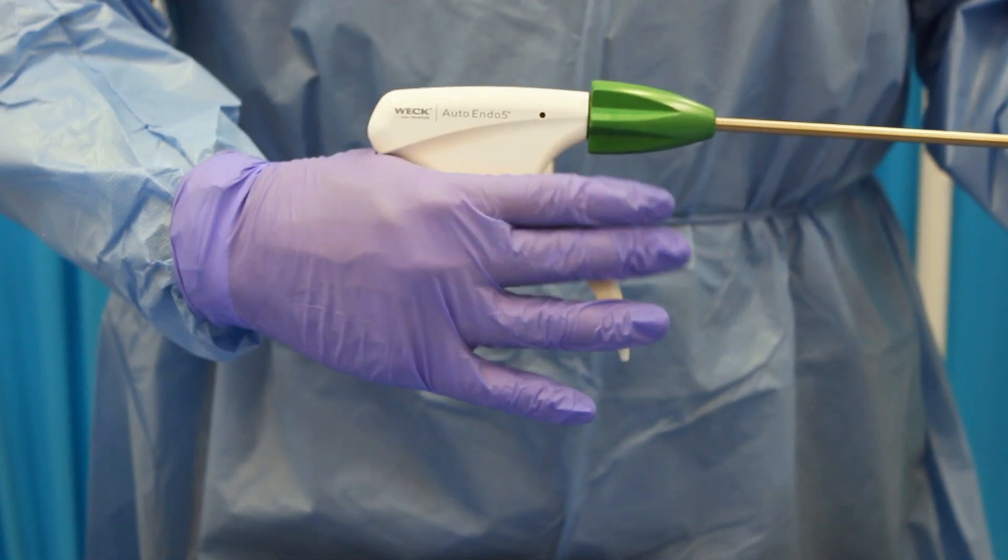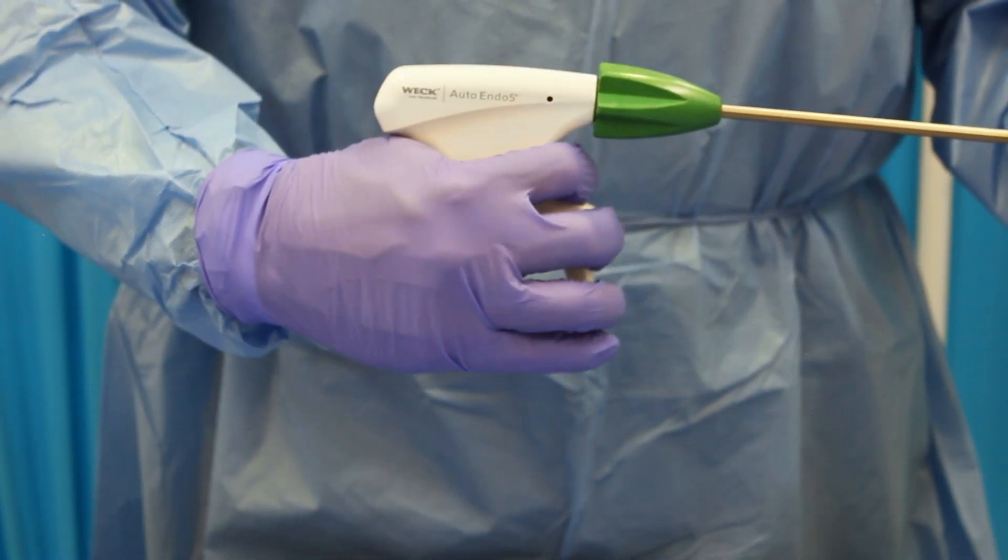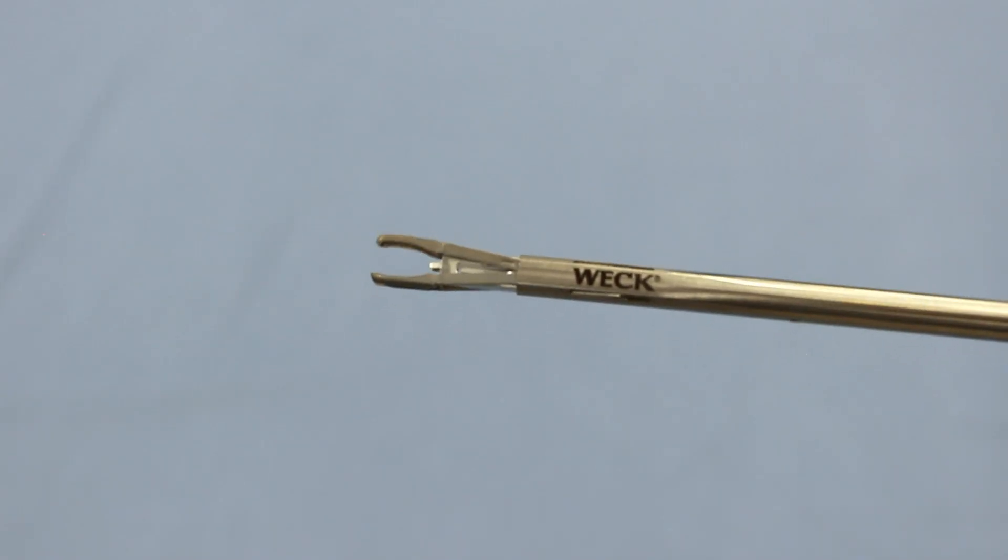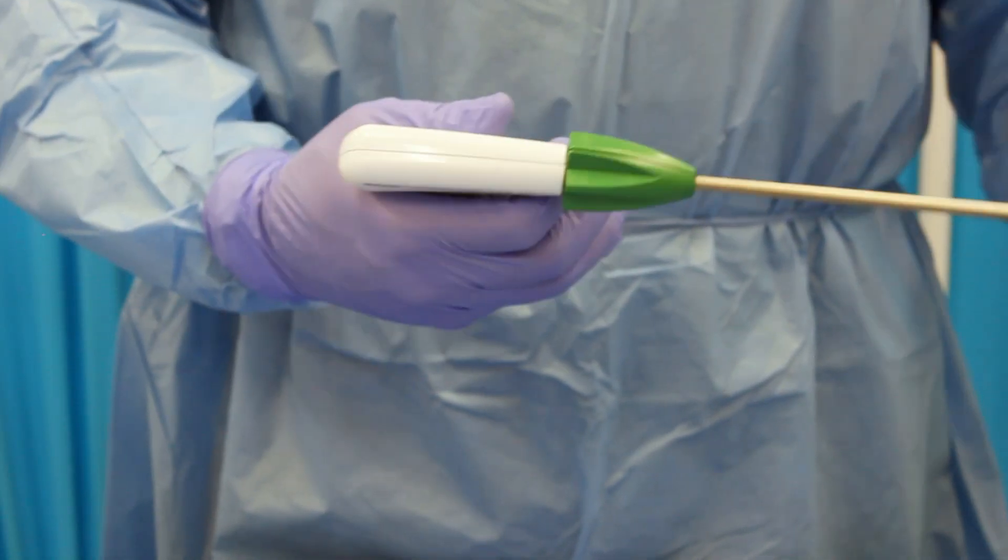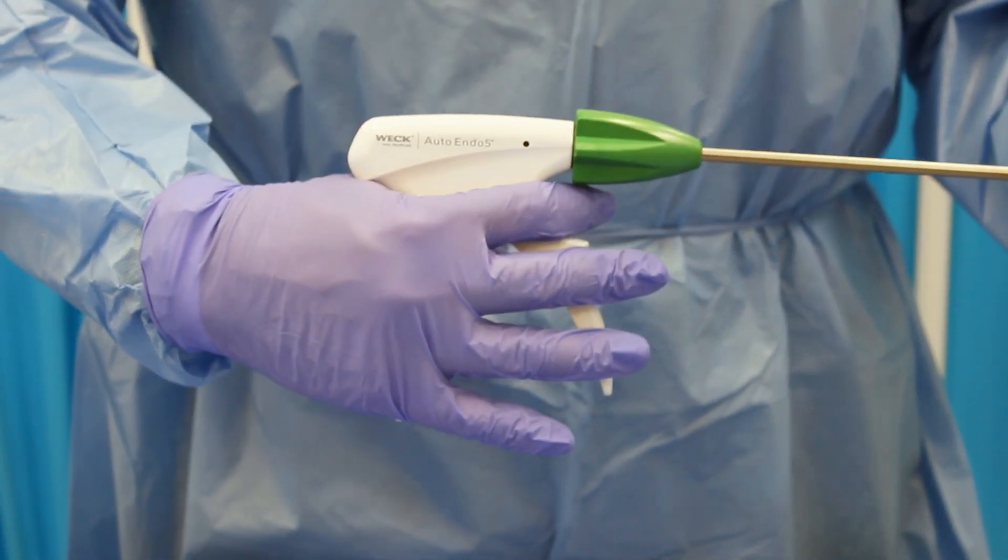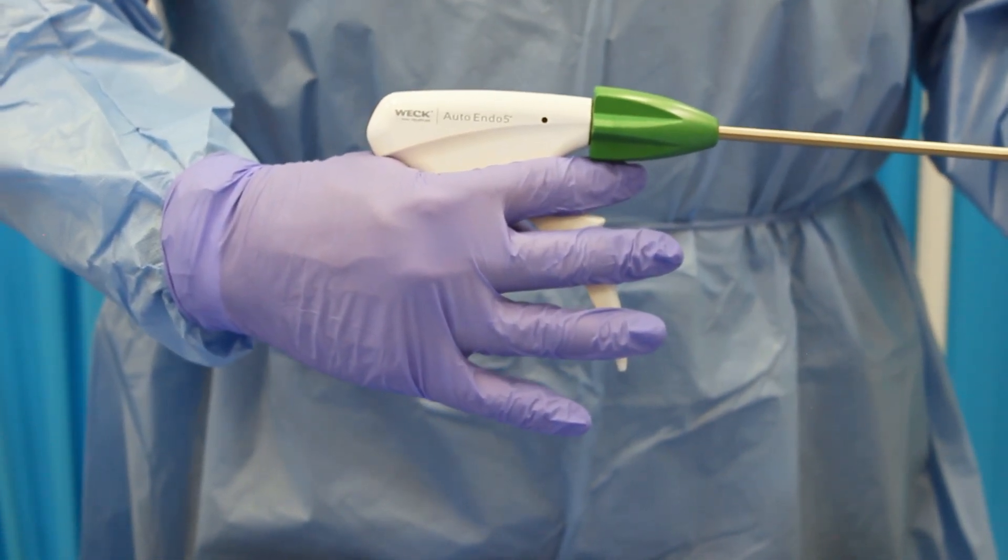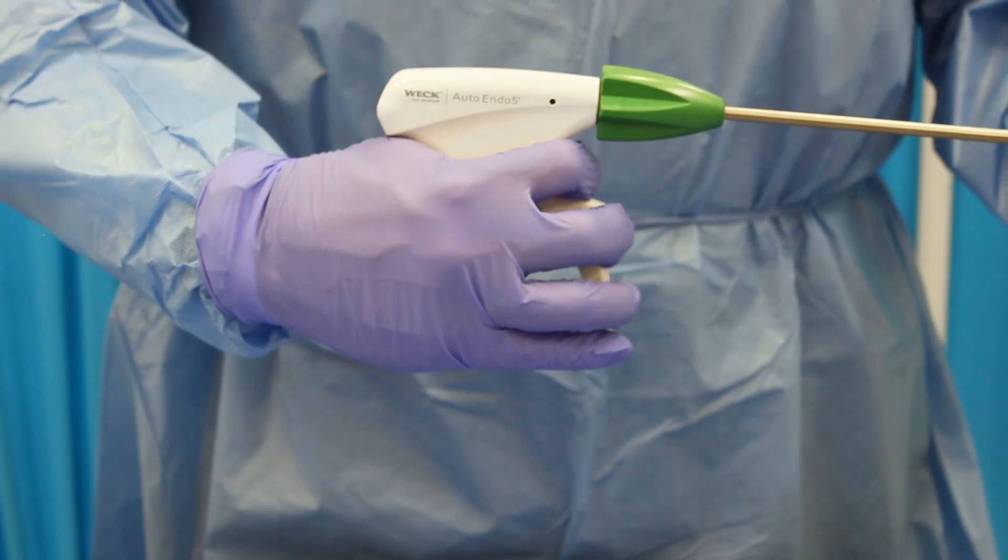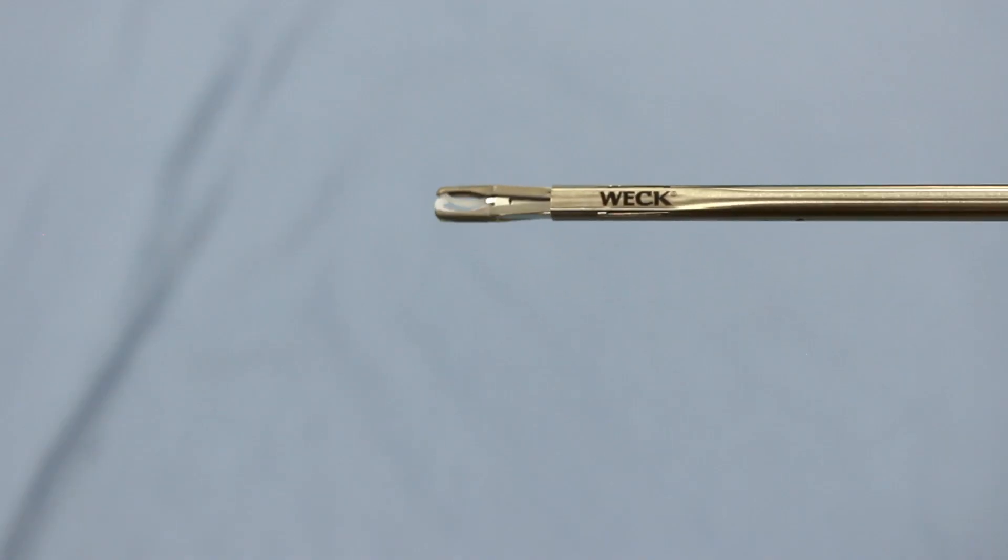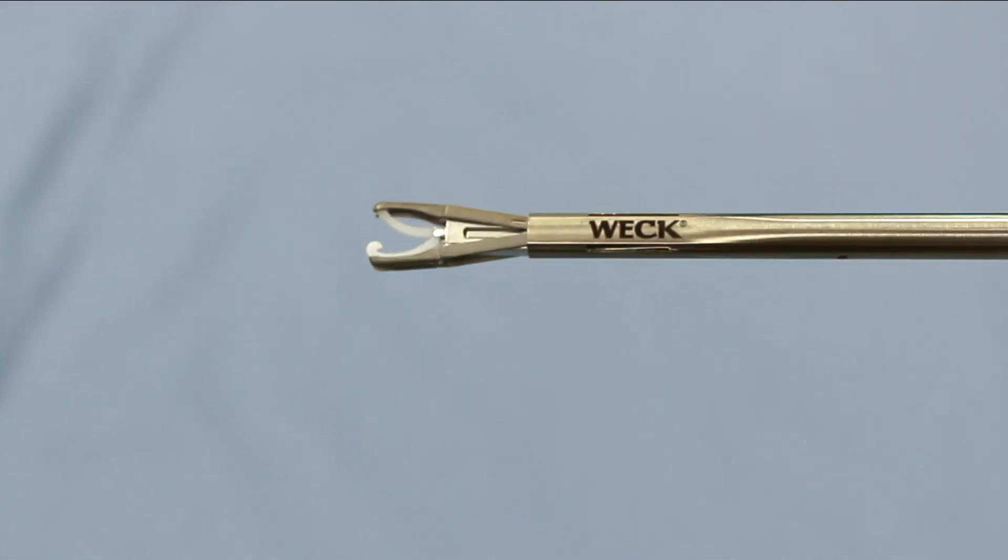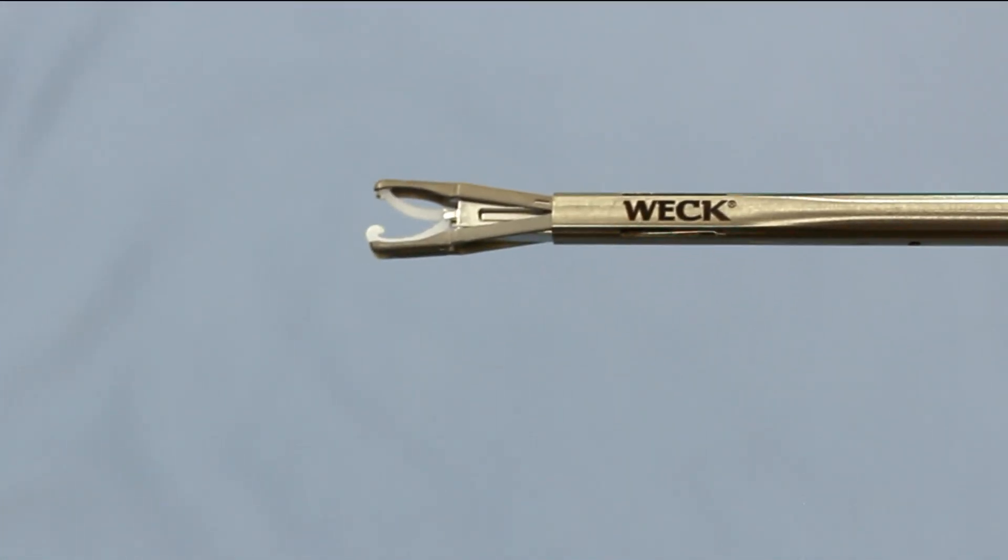Step 2: Load the first clip into the jaws by squeezing the trigger towards the handle. The ratcheting trigger provides distinct tactile and auditory feedback during the loading and firing process. When loading a clip into the jaws, the device will make a series of soft clicks culminating in a final, louder click, which indicates that the clip is loaded in the jaws at full aperture. Visually confirm that the clip is positioned in the jaws. The applier jaws are designed with three points of contact to provide clip stability, preventing unwanted clip movement when ligating.